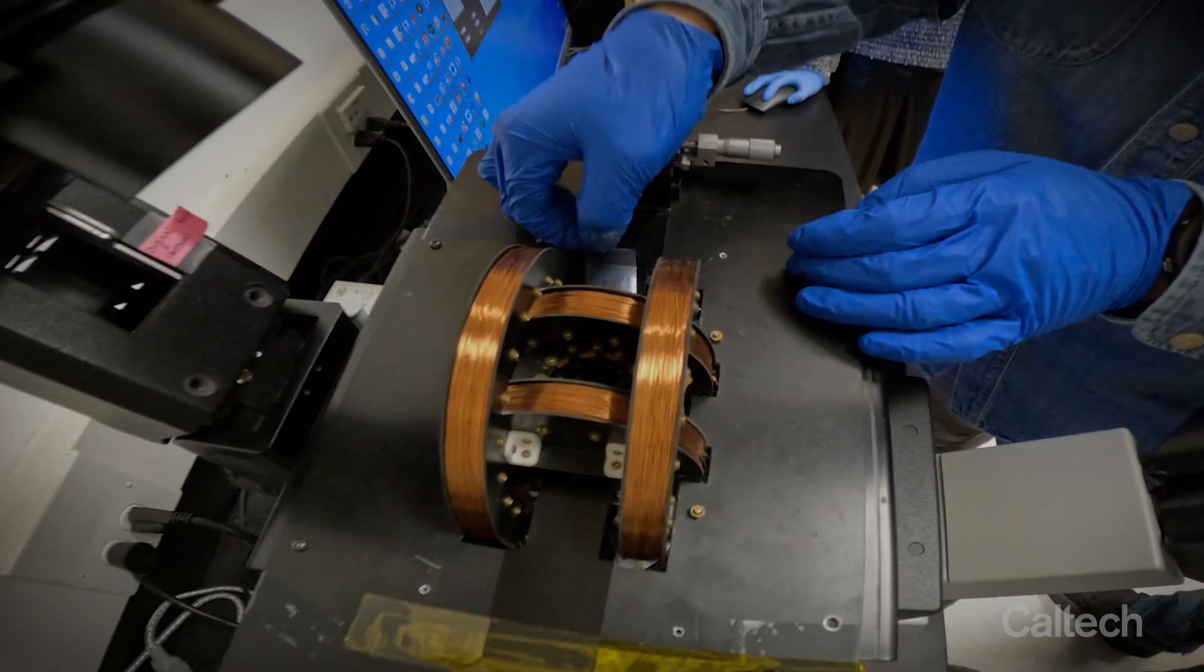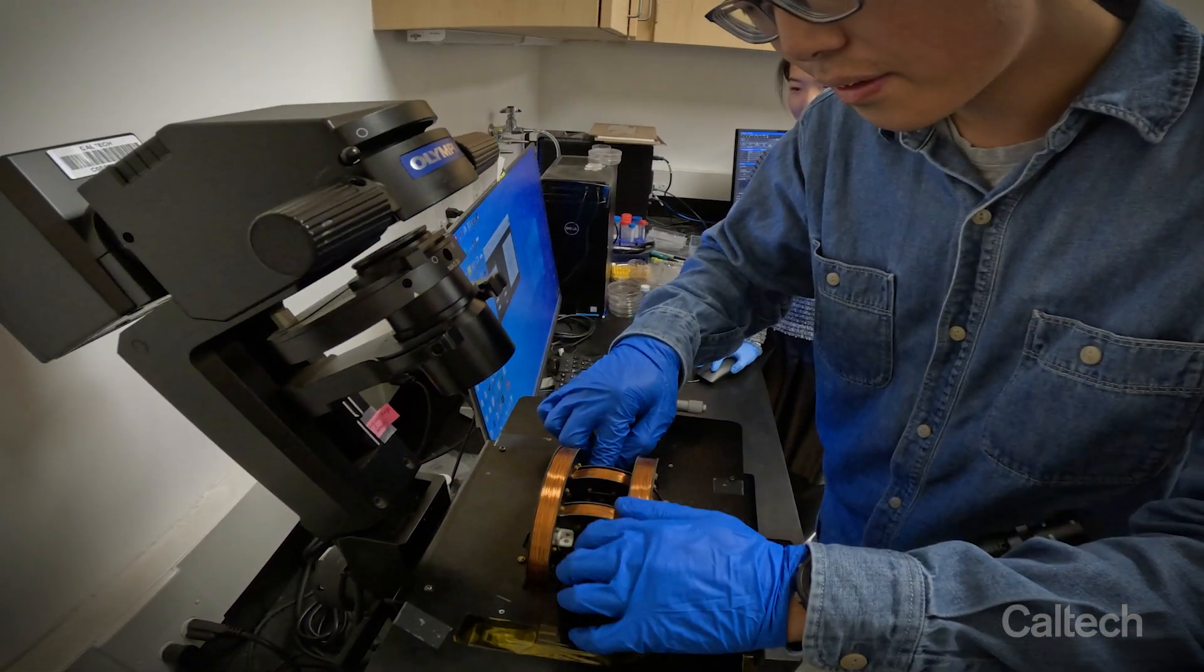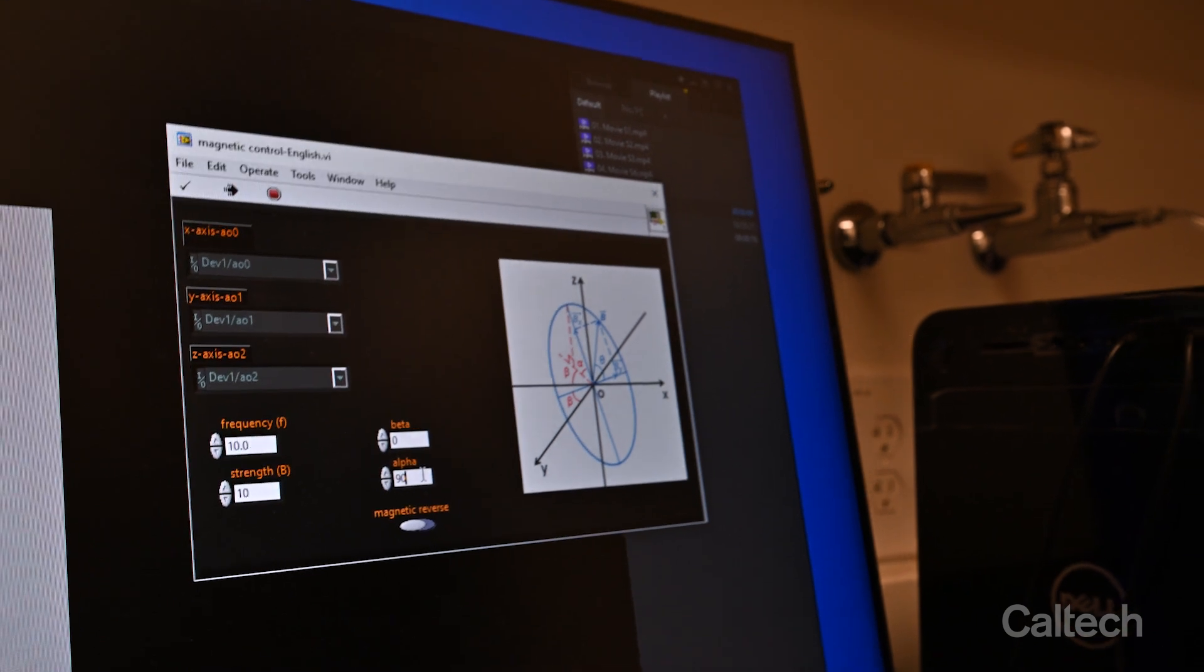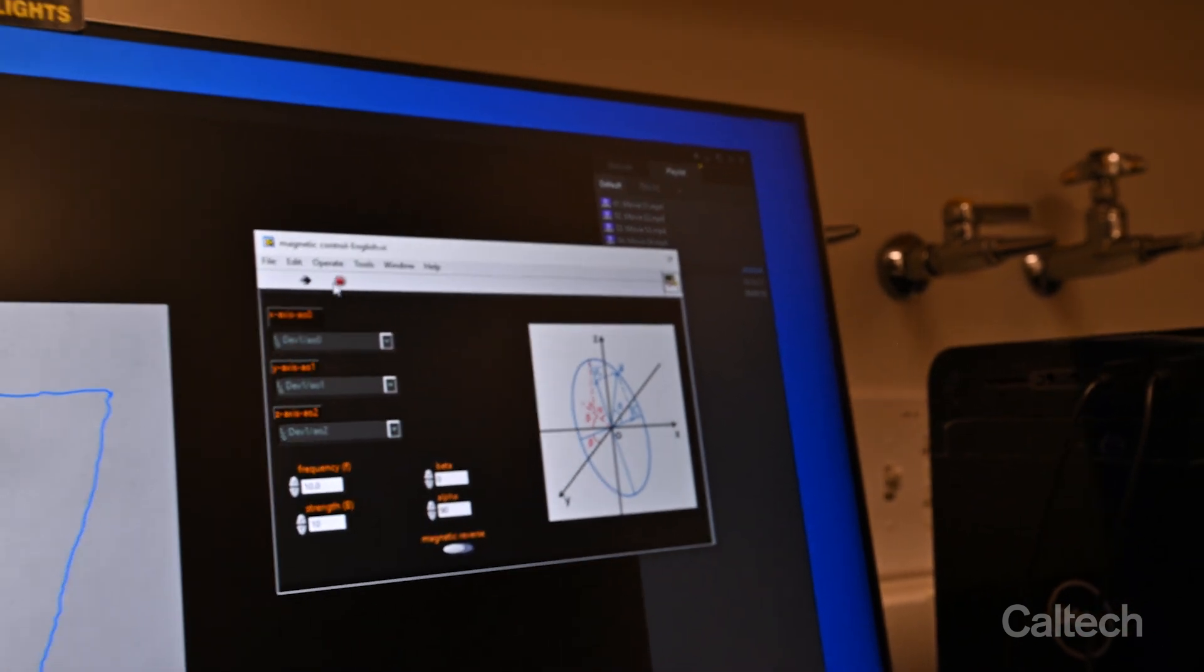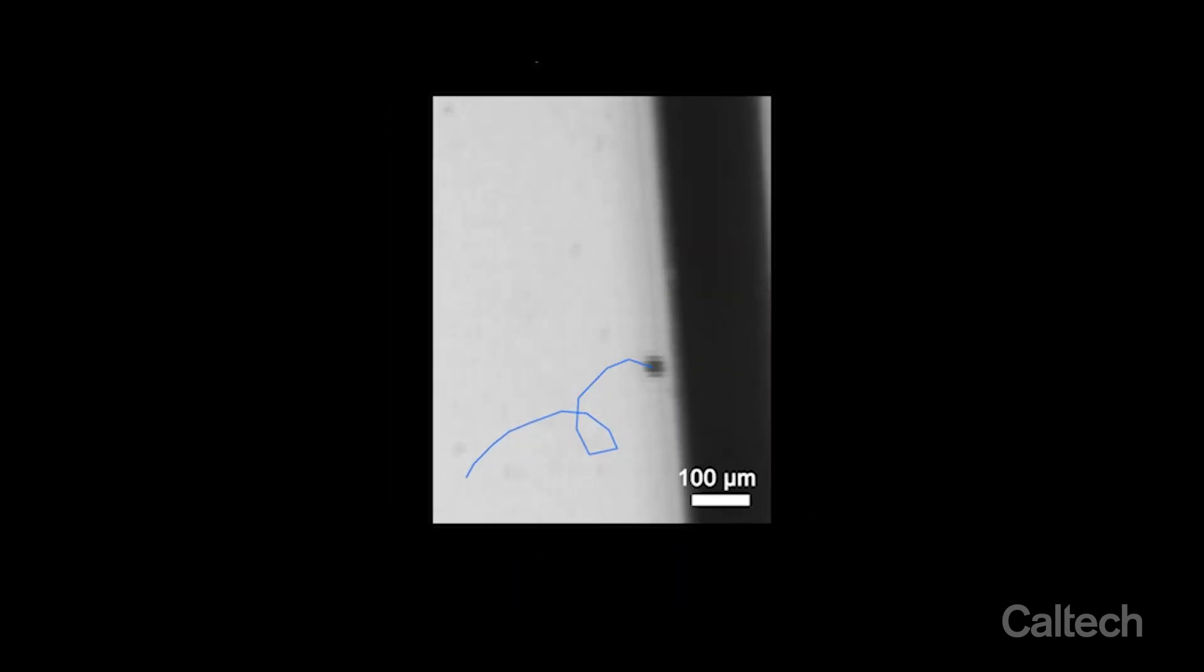To enable precise control, we incorporated magnetic nanoparticles in the micro nanostructure design. We can accurately control a large number of these micro robots simultaneously using external magnetic field. This is very important for tumor site targeting for in vivo applications.